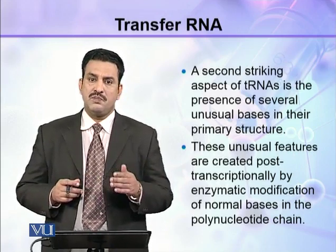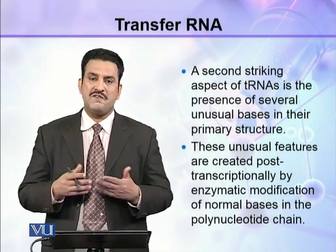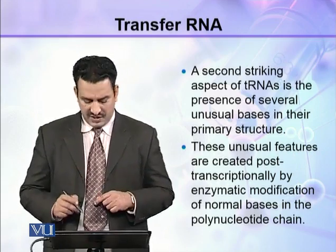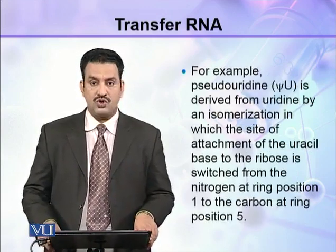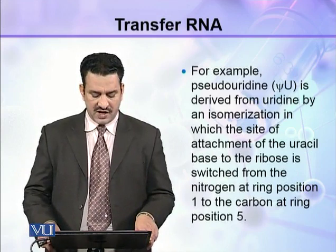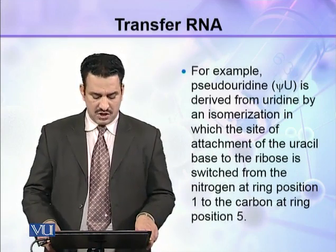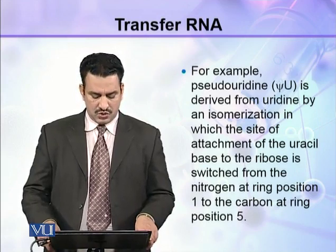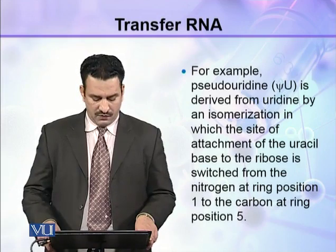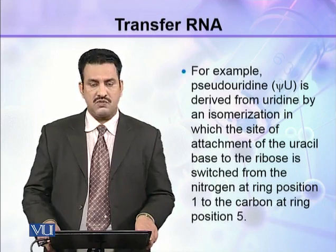These unusual bases are modified post-transcriptionally by enzymatic modification. For example, pseudo-uridine is derived from uridine by an isomerization in which the site of attachment of the uracil base to the ribose is switched from the nitrogen at ring position 1 to the carbon at ring position 5.